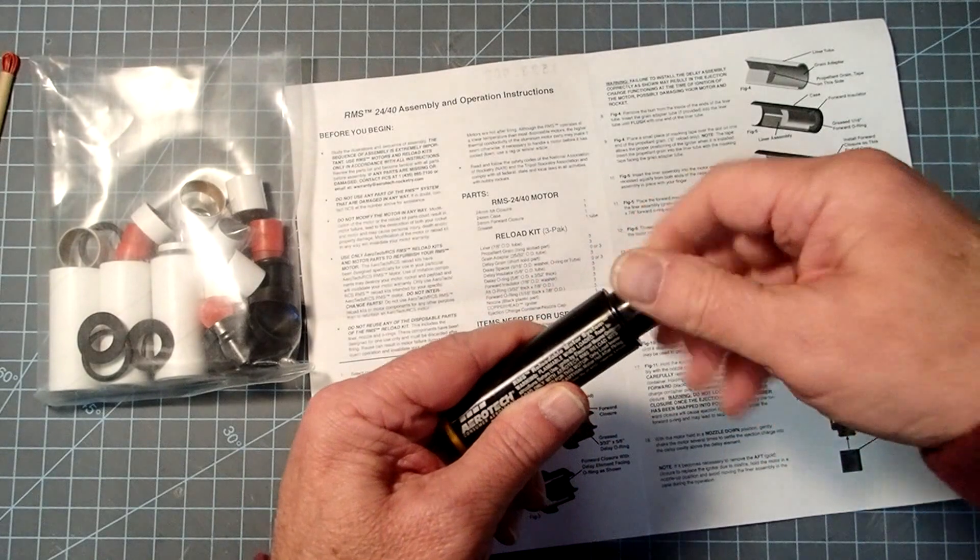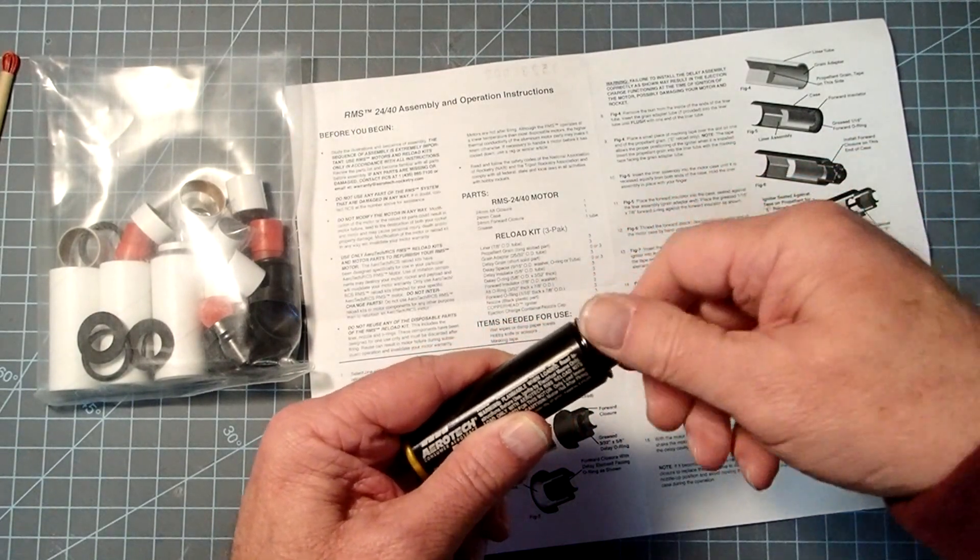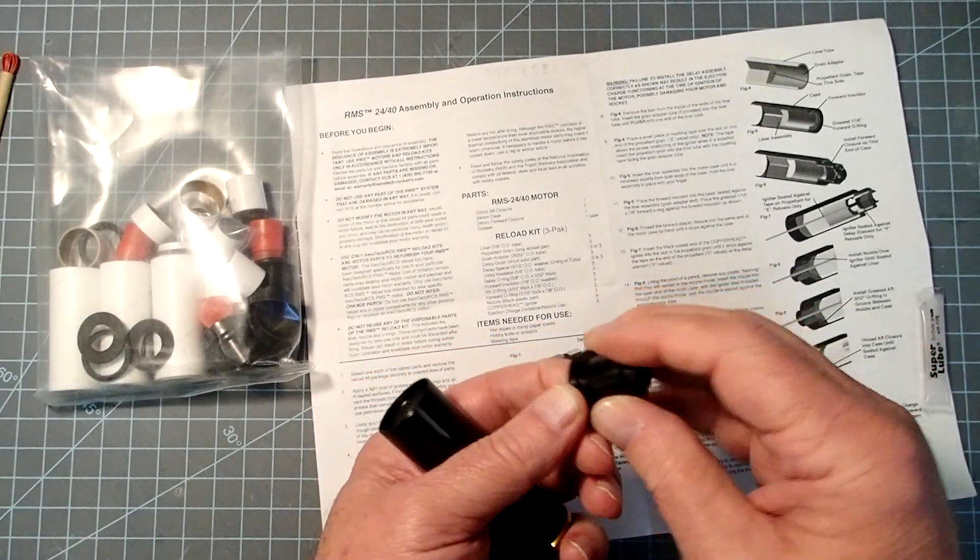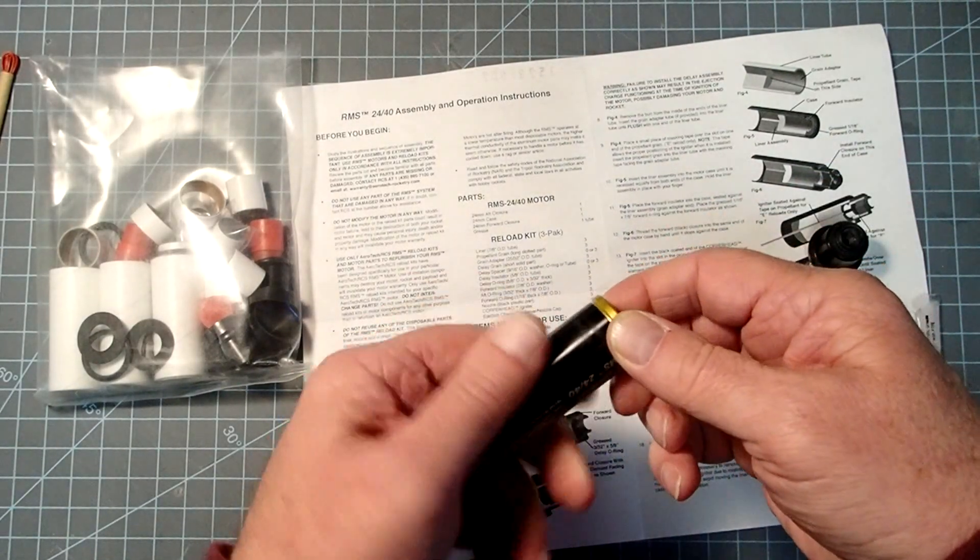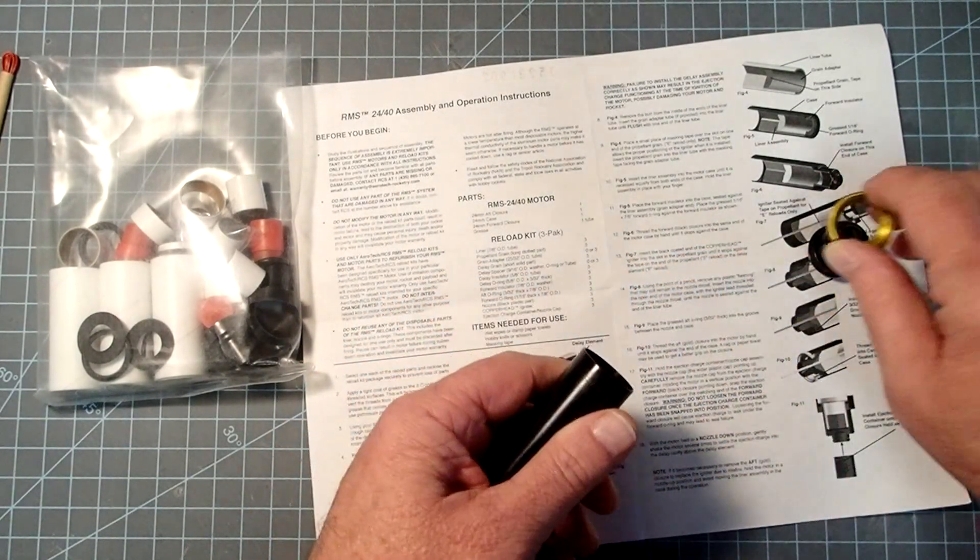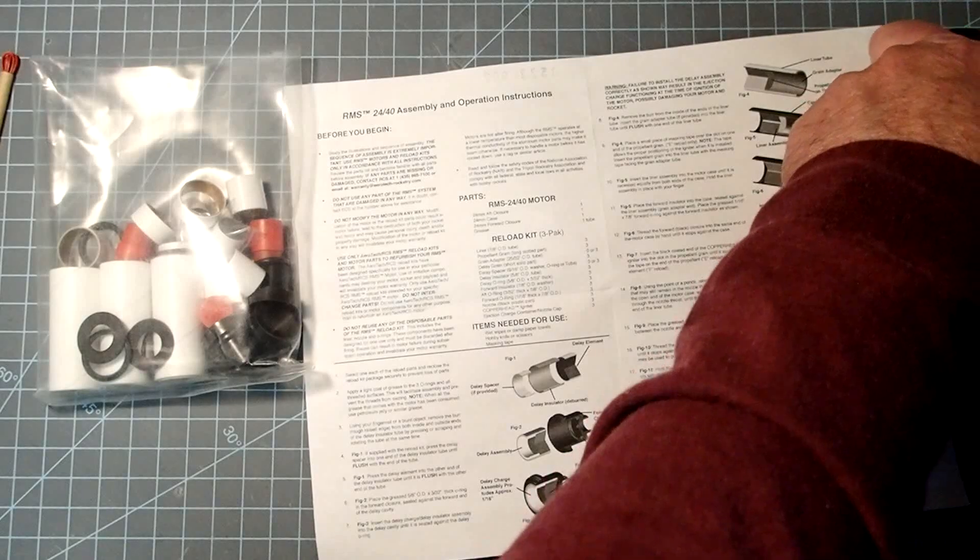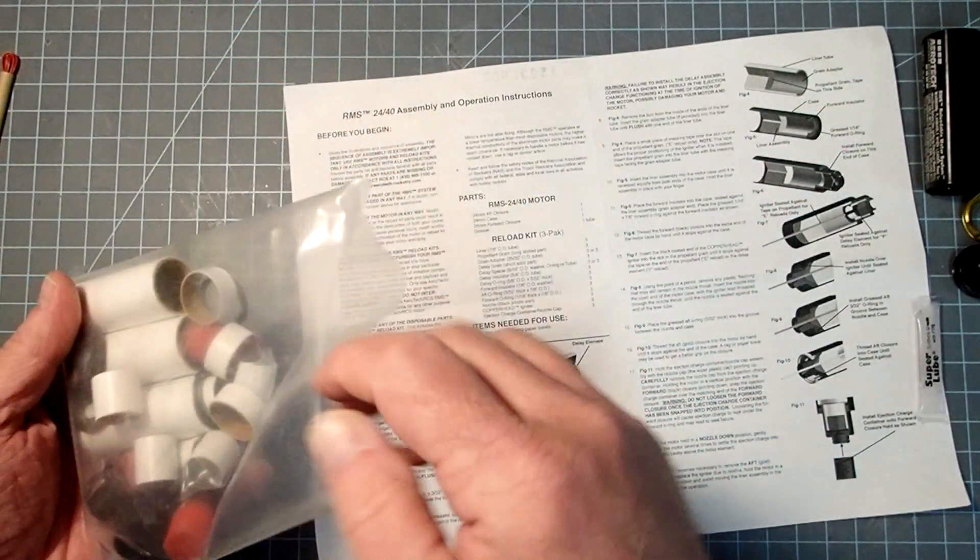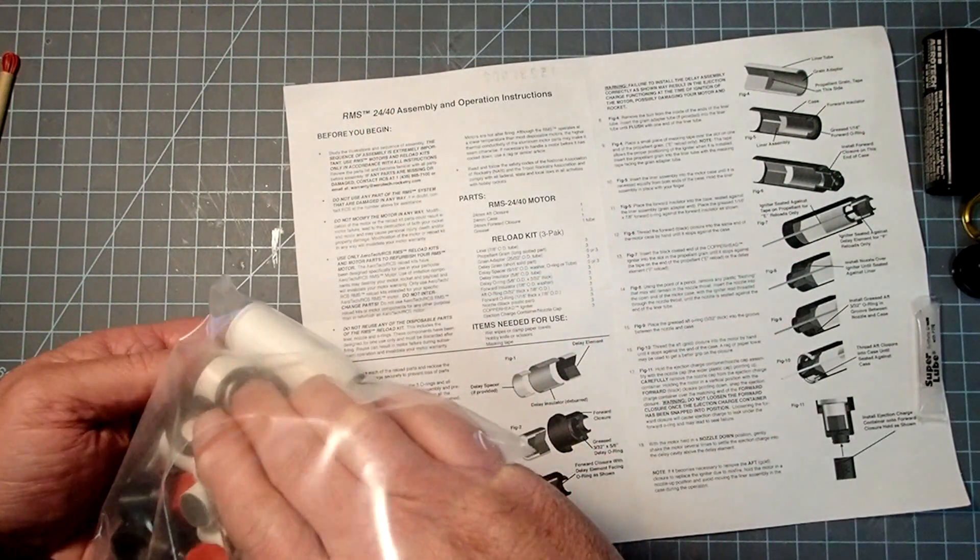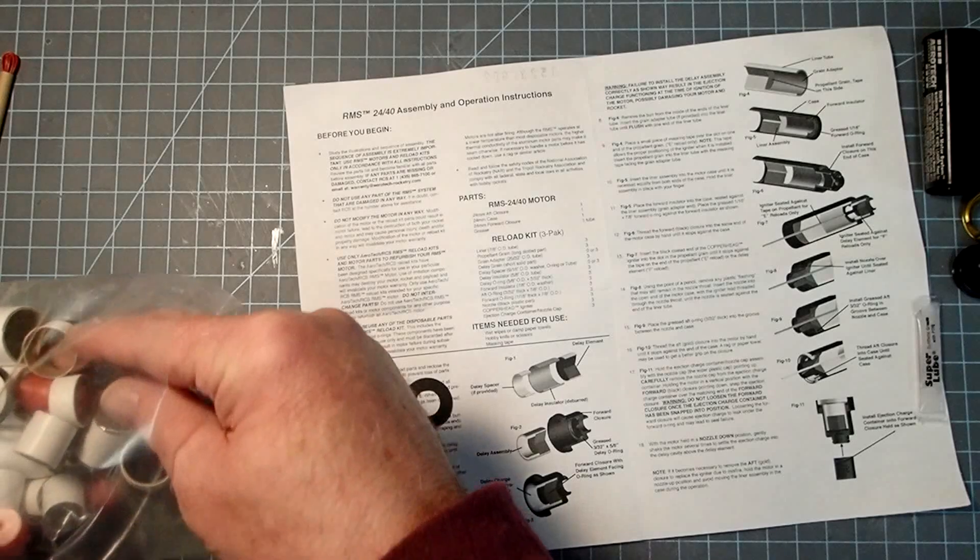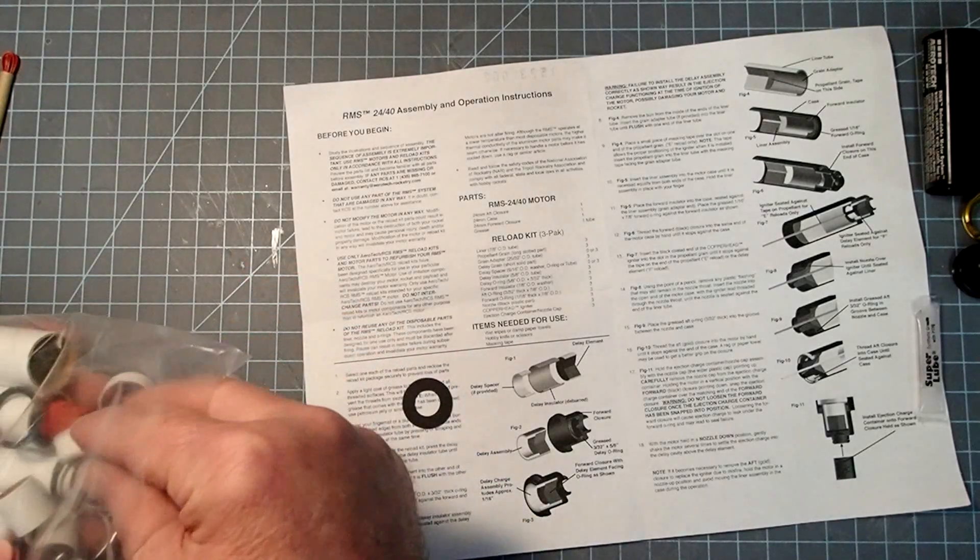I'm going to go ahead and unscrew the parts here. So there's a forward closure here that will house the delay charge and the ejection charge. The aft closure holds the main part of the motor inside. Looking through this kit, basically there's three or multiples of three of everything. So we'll just pull things out here.